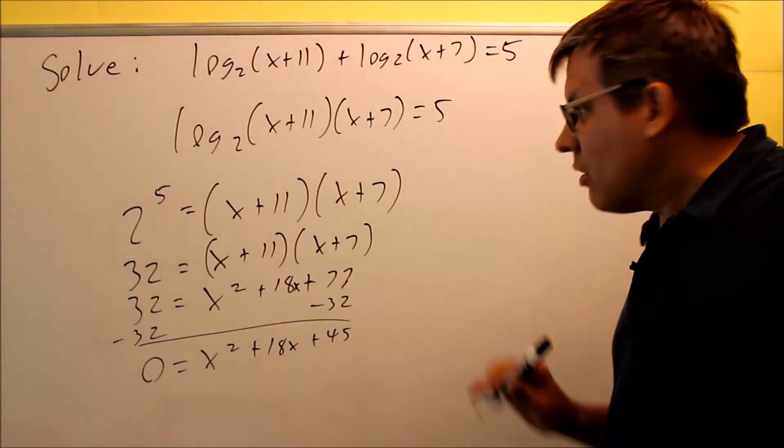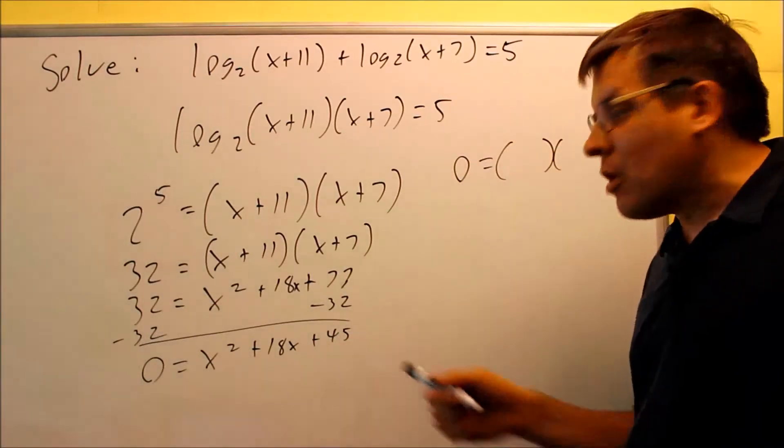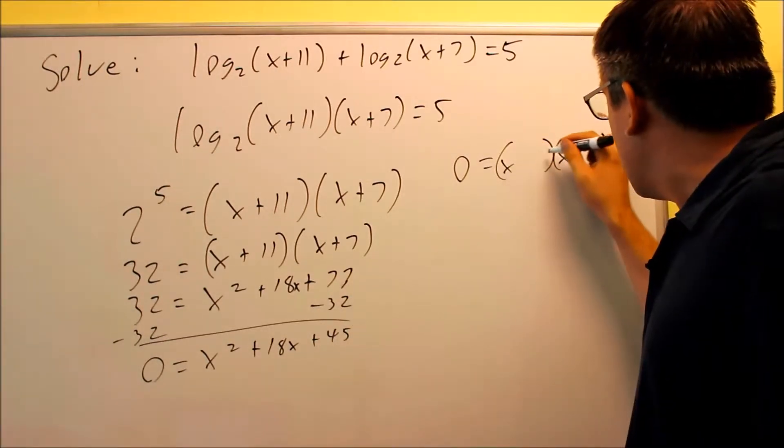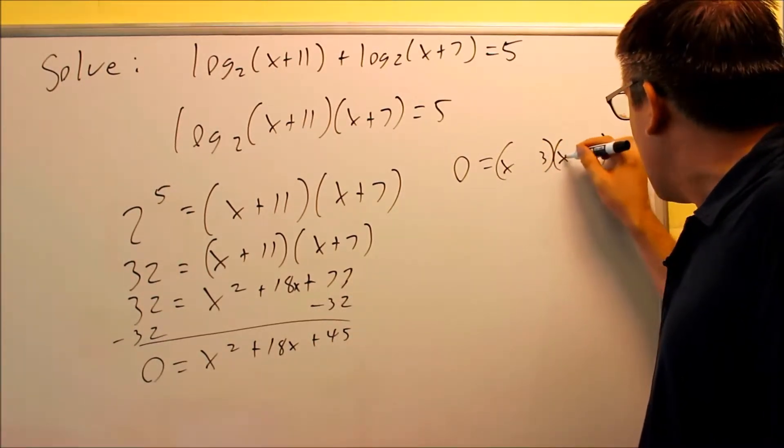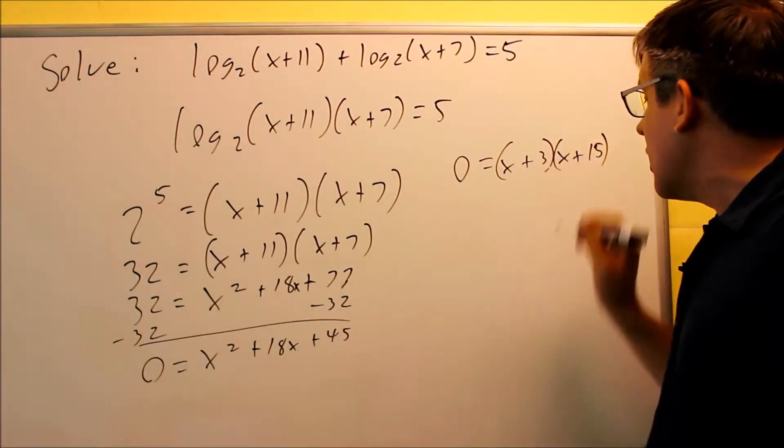Now we want to factor that. Okay, so if we factor this one, we're looking for factors of forty-five, numbers that multiply to make forty-five and add to be eighteen. The numbers that work here are going to be three and fifteen. Three times fifteen is forty-five, add it together you get eighteen, both of these are going to have a plus.